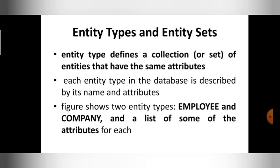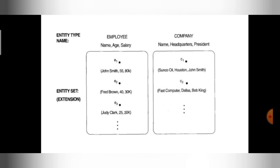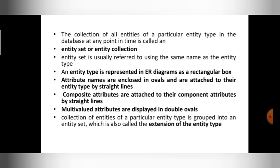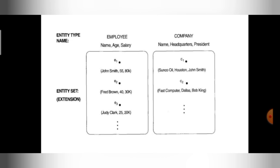Each entity type in the database is described by its name and attributes. The figure shows two entity types: employee and company, with a list of attributes for each. The employee entity has attributes name, age, and salary; the company entity has attributes name, age, and president. I can group employee one, employee two, employee three, company one, company two — that is nothing but an entity set. The collection of all entities of a particular entity type in the database at any point in time is called an entity set or entity collection.